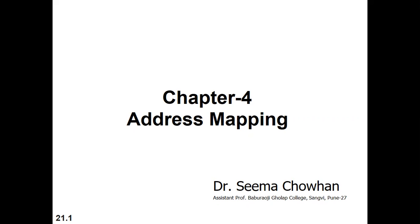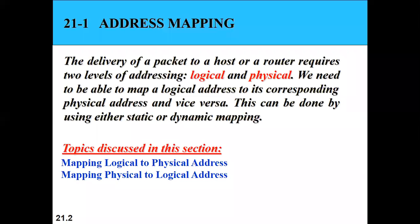For a given IP address, if we want to find out the MAC address, we make use of the protocol called the Address Resolution Protocol, or ARP. Similarly, when we need to find the logical address from the physical address, we require the Reverse Address Resolution Protocol, RARP. The delivery of a packet to a host or router requires two levels of addressing: logical and physical.